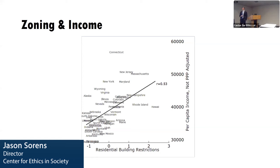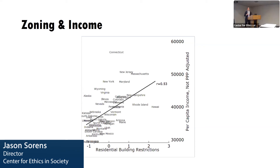Zoning and per capita income: there's a positive relationship here. If you have stricter building restrictions, you have higher per capita income by state. Does this mean that your economy is more productive because you have more zoning? No, that's not what's happening here. Remember, people are moving away from these states.